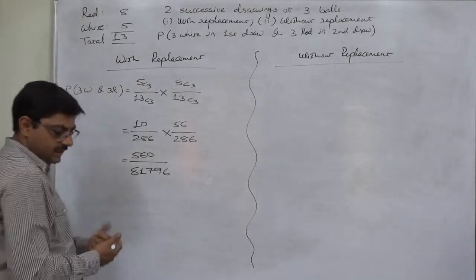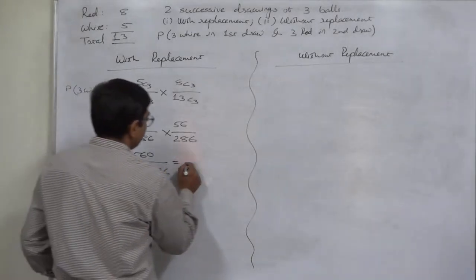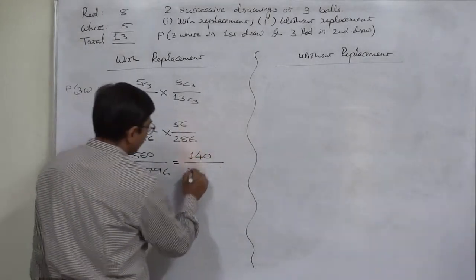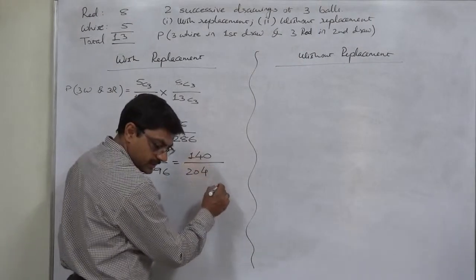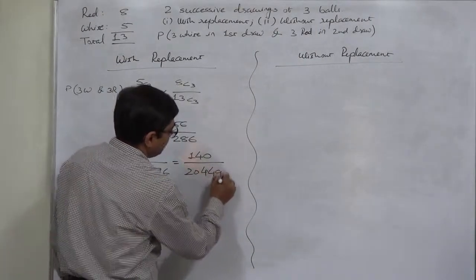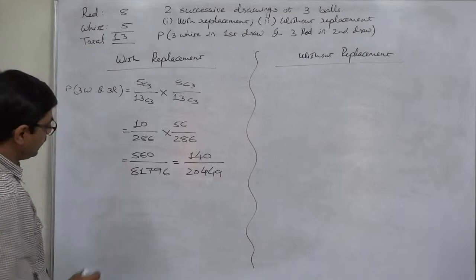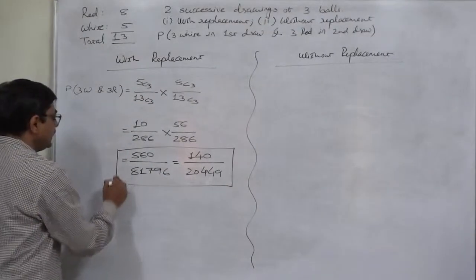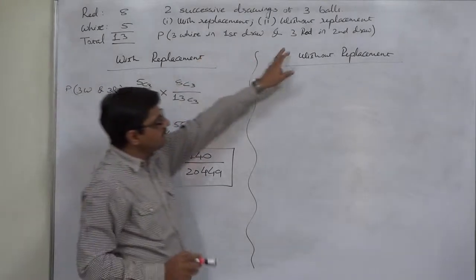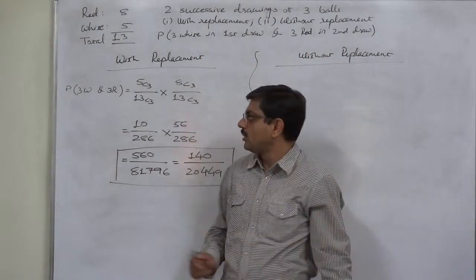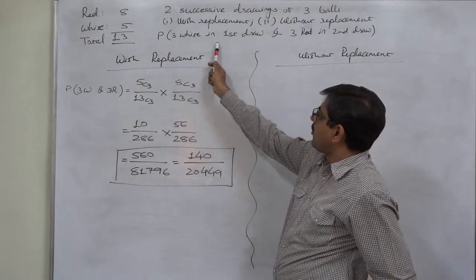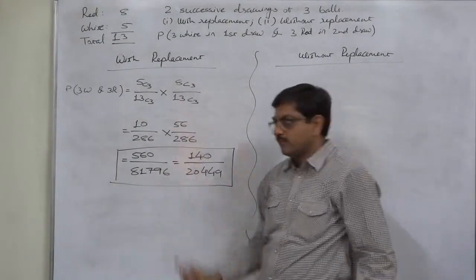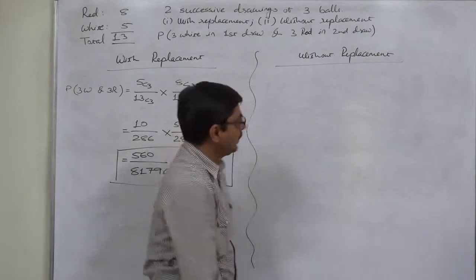Simplifying 560 over 81796 by dividing by 4, the final result is 140 divided by 20449. This is the probability of drawing three white balls in the first draw and three red balls in the second draw when the balls are replaced — the with replacement case.